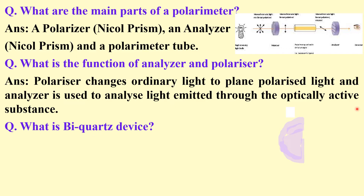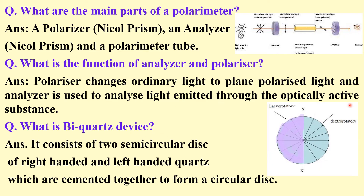What is the biquartz device? The biquartz device consists of two semi-circular discs — one of levorotatory (left-handed) quartz and one of dextrorotatory (right-handed) quartz. They are pasted together with a transparent cement to form a circular disc, and this device is known as the biquartz device, named because of these two semi-circular quartz discs.